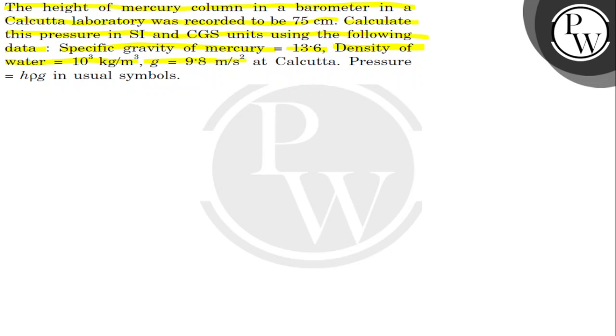Acceleration due to gravity is 9.8 meter per second square. And the pressure is equal to H rho g in their usual symbols. We will see how this particular problem we will solve.